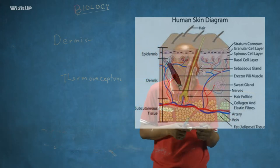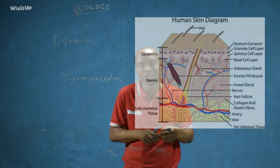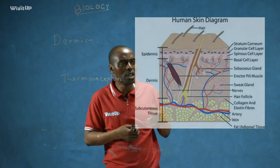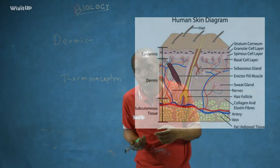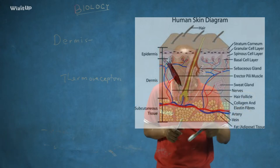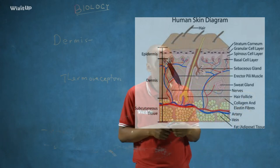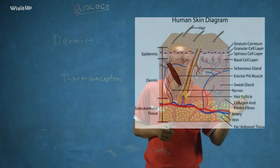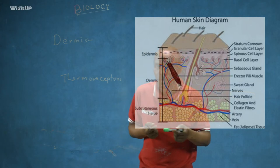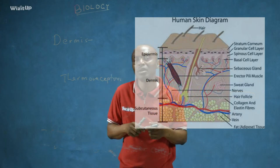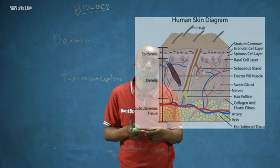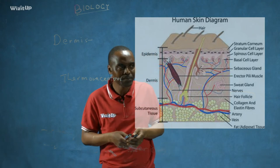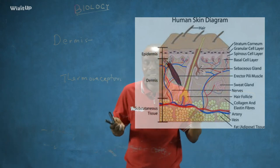We also have collagen and elastic fibers in the skin. These collagen fibers play mechanical and supportive roles in our body and in the skin. There are also blood vessels — arteries and veins — which help to transport food, water, and oxygen to the skin for effective functioning.